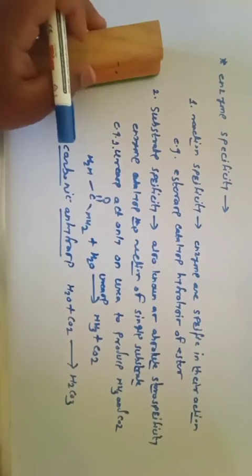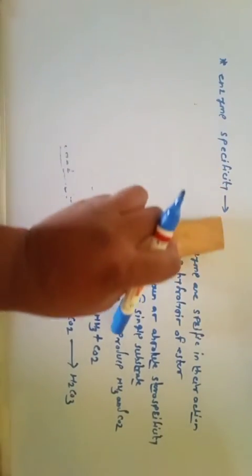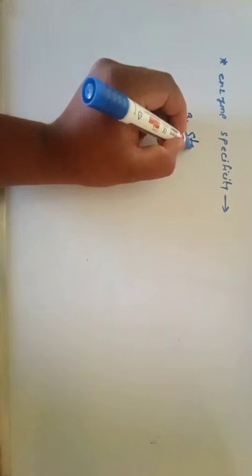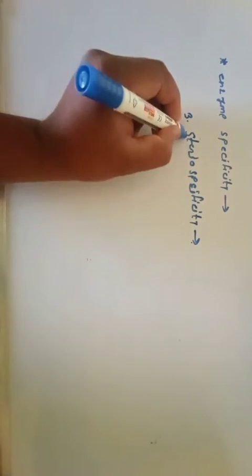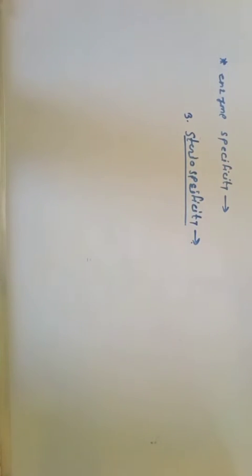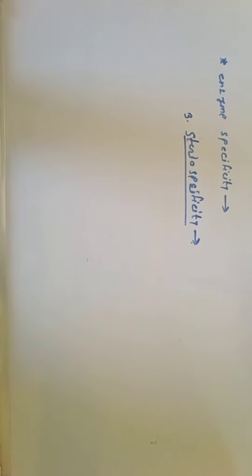Let us discuss the third type of specificity: stereospecificity. Depending on the type of stereochemistry present in the substrate, different types of stereospecificities are observed in enzymes.